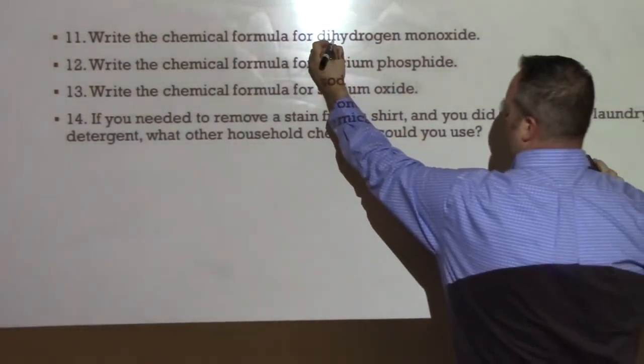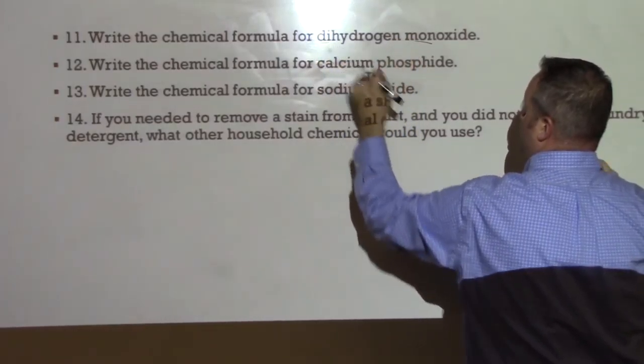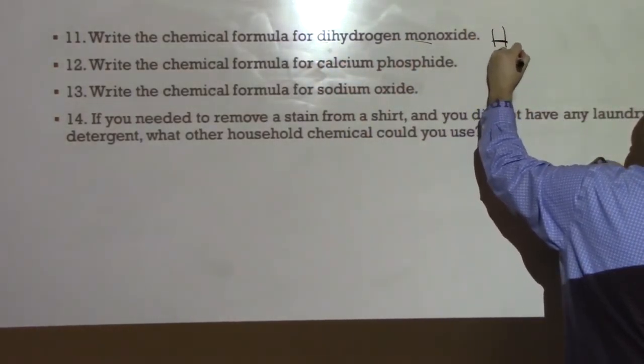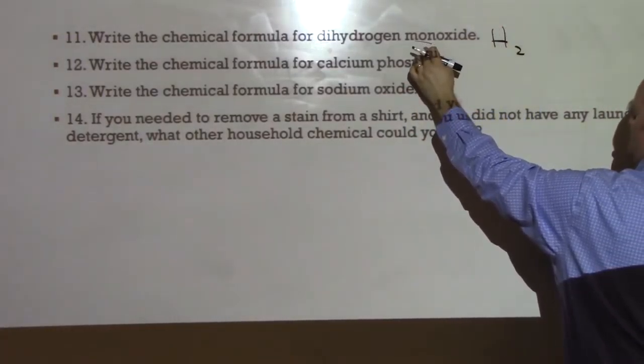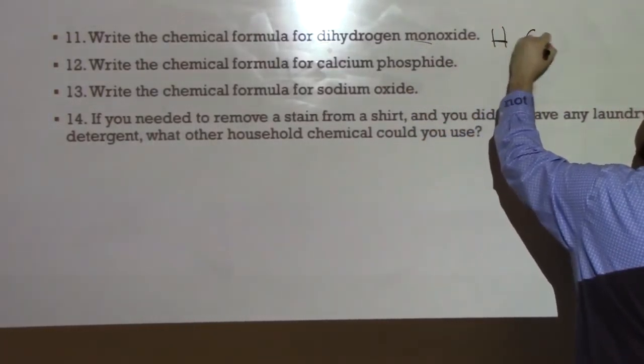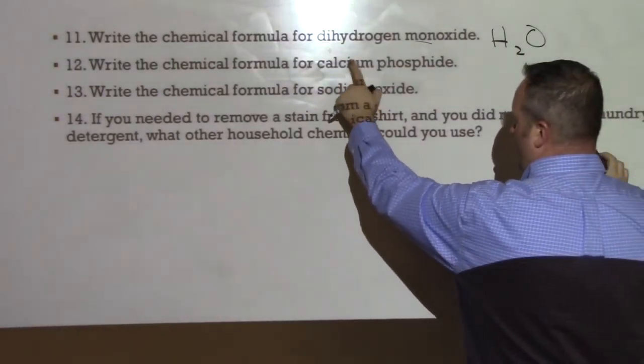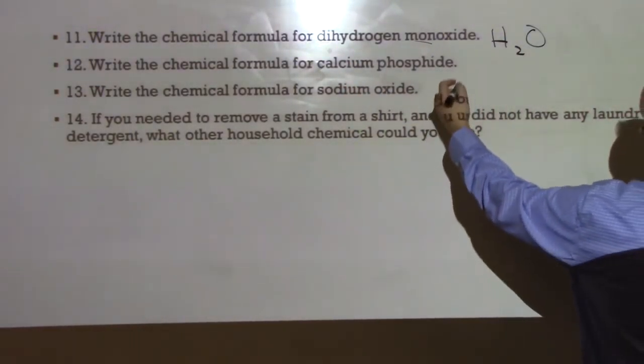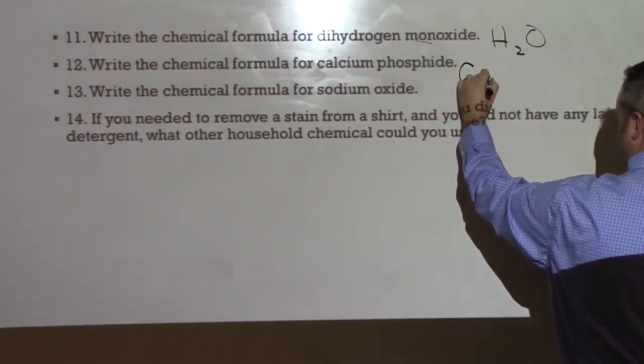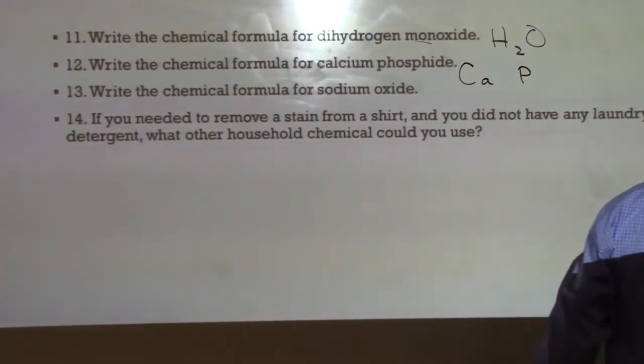So moving right along. Hopefully I'm not moving too fast. Write the chemical formula for dihydrogen monoxide. So look at your prefixes. That's a prefix for two. So we have hydrogen, that's di. And then monoxide, we have oxygen, but because we have mon or mono, that's one. So H2O.